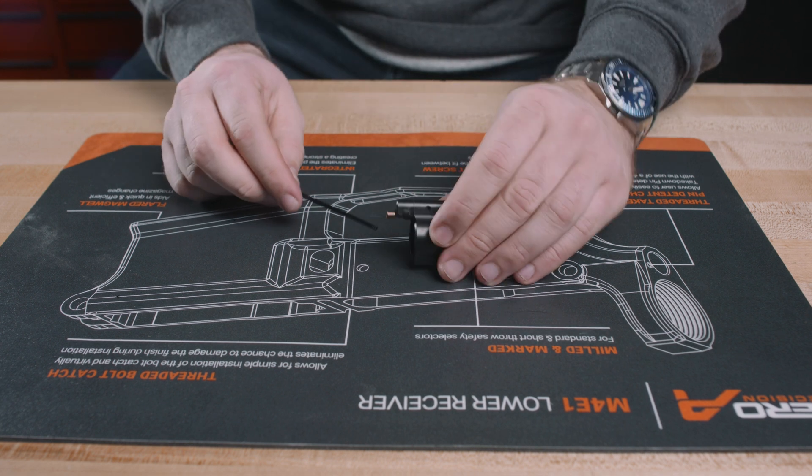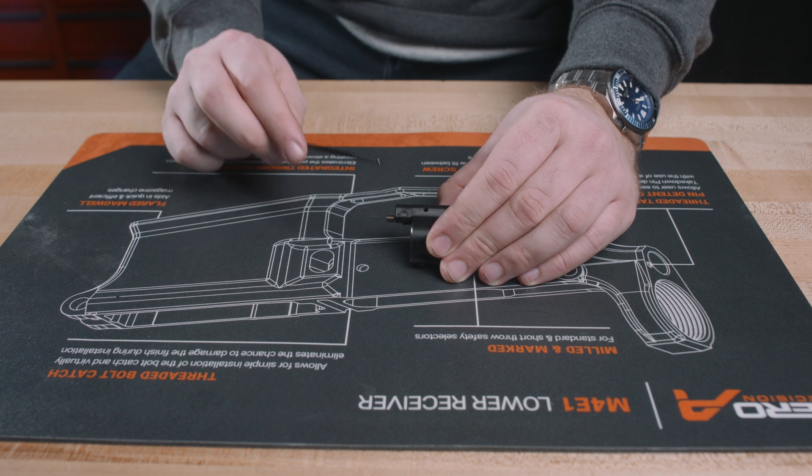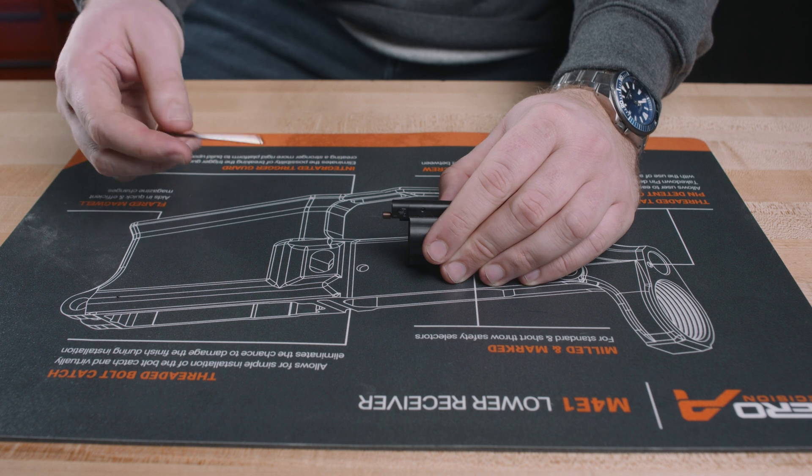Up in the front here, that's going to be where all the magic happens. This is your adjustment screw. This is what's responsible for restricting that gas flow in the gas block itself. This is what we're going to be focusing on for the assembly and disassembly process.